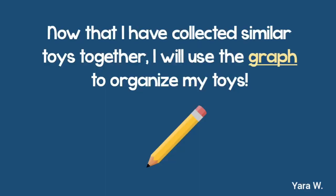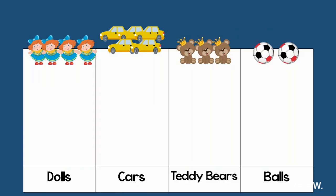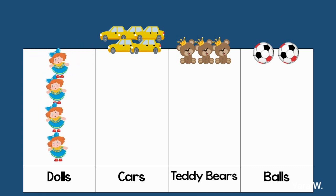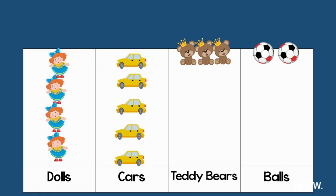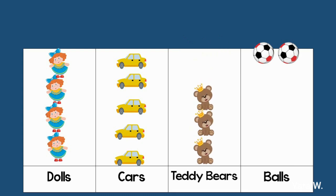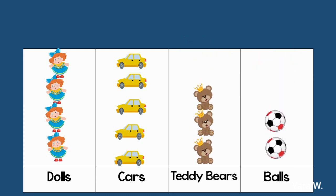Now that my toys are all organized, I will get on with my graph. I will place all the dolls, cars, teddy bears, and footballs in their correct columns on the graph.